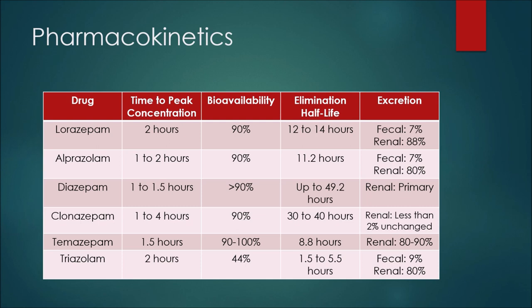With diazepam, the time to peak concentration would be one to one and a half hours, so this medication acts relatively quickly. The bioavailability would be greater than 90 percent, and the elimination half-life would be up to 49.2 hours. Comparing this half-life to those of alprazolam and lorazepam, diazepam would stay in your system much longer. This medication is primarily excreted renally.